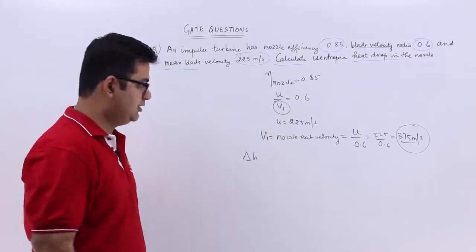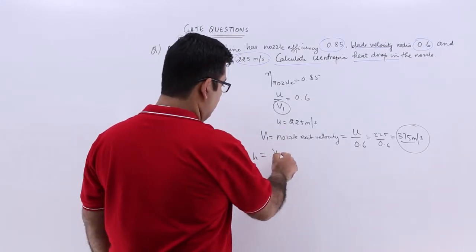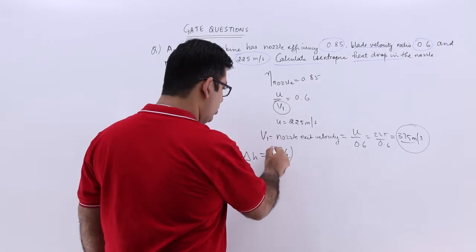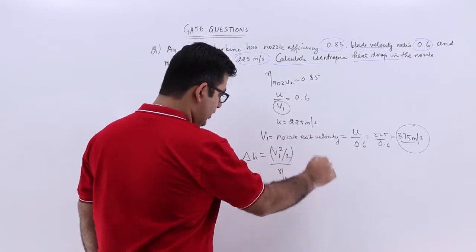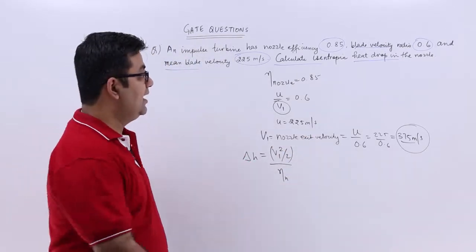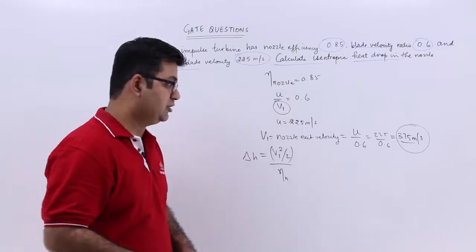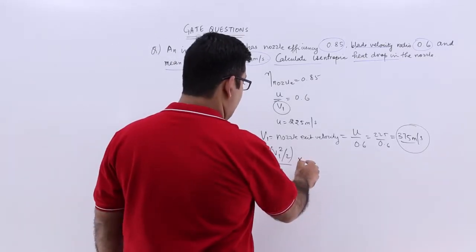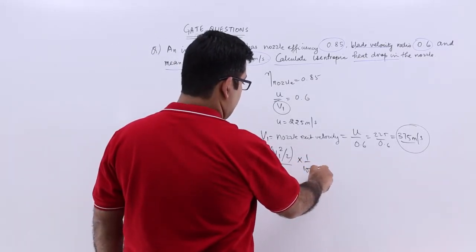Delta h equals v1 squared divided by 2, divided by the nozzle efficiency. Let's calculate this in kilojoules per kg, so I will divide by 1000.